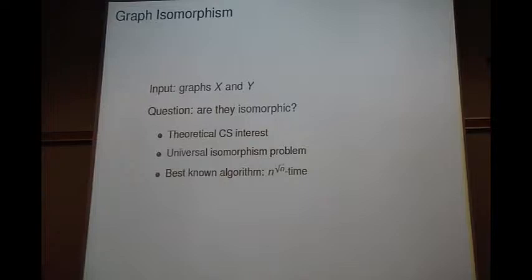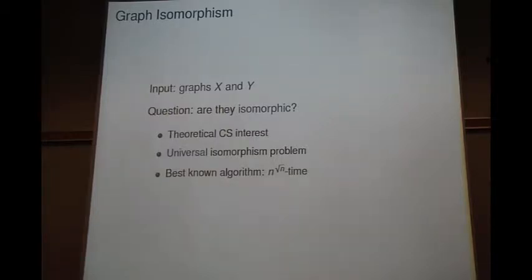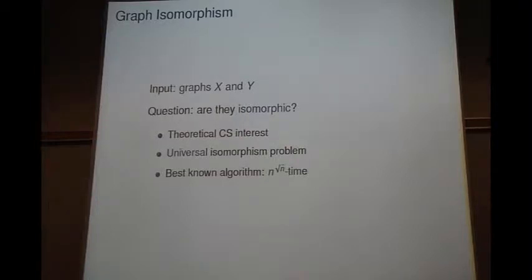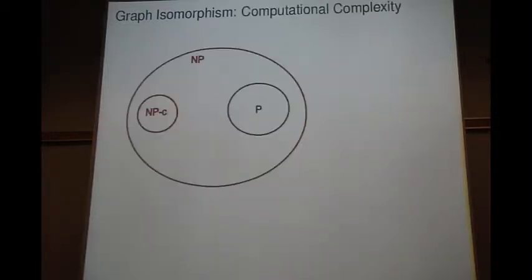The best-known algorithm right now for graph isomorphism runs in time n to the square root of n, where n is the number of vertices. It has applications in practice, but it's also of a very interesting complexity theoretic status.